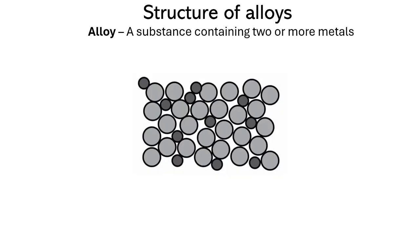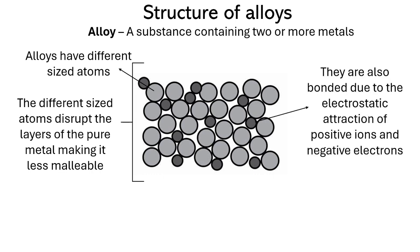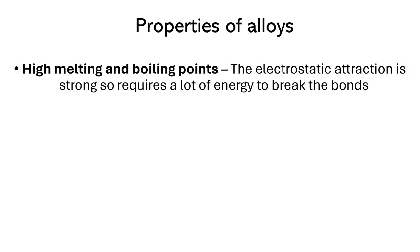When we add another metal to a pure metal, we create an alloy. The different sized atoms in an alloy disrupt the layers of the pure metal. This makes alloys less malleable. Alloys also have high melting and boiling points but they are stronger than pure metals.